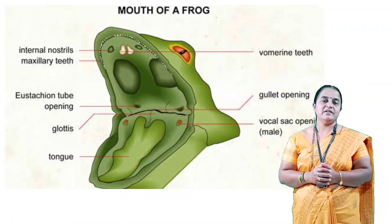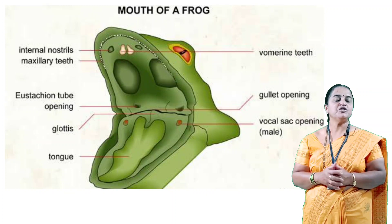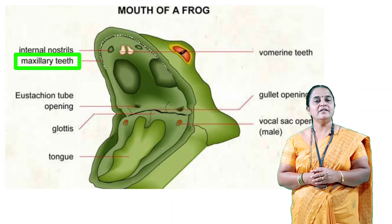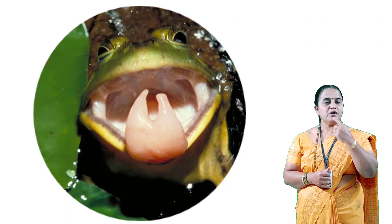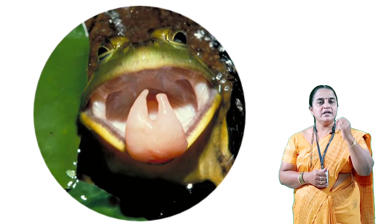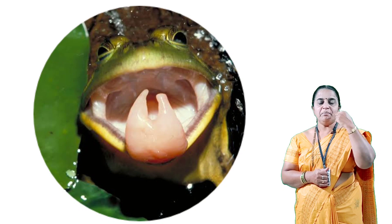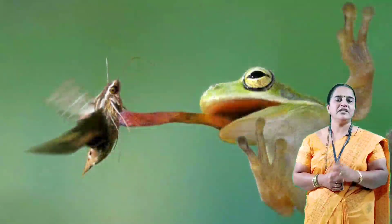Wide jaws are present. The lower jaw is without teeth. The upper jaw contains teeth and all teeth are similar, so it is isodont in nature. The tongue in frogs is protrusible because the tip of the tongue is attached at the front position, so the base can be protruded out. It is highly sticky to catch insects, which is the most favourite food of frogs.